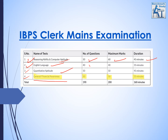Next is English, which has 40 questions worth 40 marks, and you get 35 minutes. Next is quantitative aptitude, which has 50 questions and 45 minutes. This can be a bit lengthy because it is based on reasoning and quantitative aptitude. Then next is general and financial awareness, in which there are 50 questions worth 50 marks and you get 35 minutes.